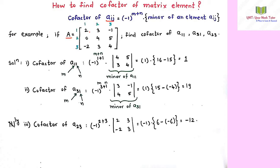Suppose matrix A is given as: 2, 3, minus 1 in row one; 0, 4, 5 in row two; and minus 2, 3, 4 in row three. There are three rows and three columns. It is asked to find the cofactor of a11, a31, and a23.